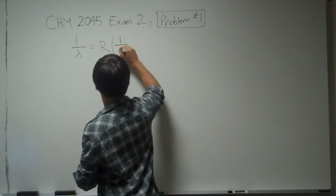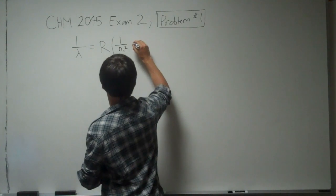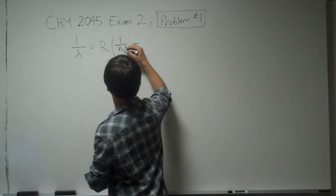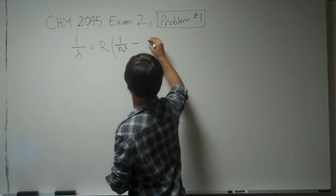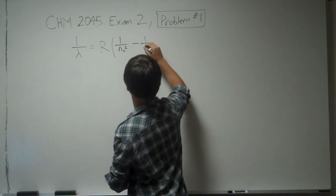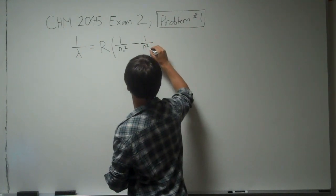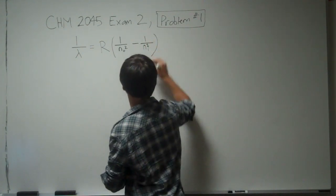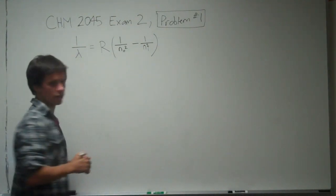1 over n final squared minus 1 over n squared initial. So there's the equation.